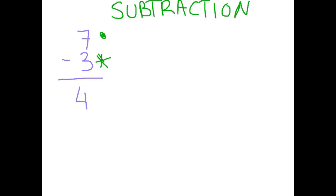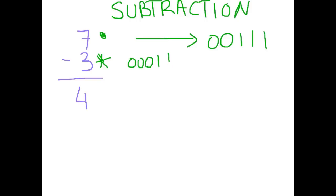We are going to do this calculation using 5-bit binary. The 7 converts to 0, 0, 1, 1, 1. A 3 in normal binary would be 0, 0, 0, 1, 1, but because we want to subtract it we need to take the 2's complement: work from right to left, keep it the same until the first 1, keep that first 1 and change everything after. So the number that goes into our calculation is 1, 1, 1, 0, 1 — and we add those two together.